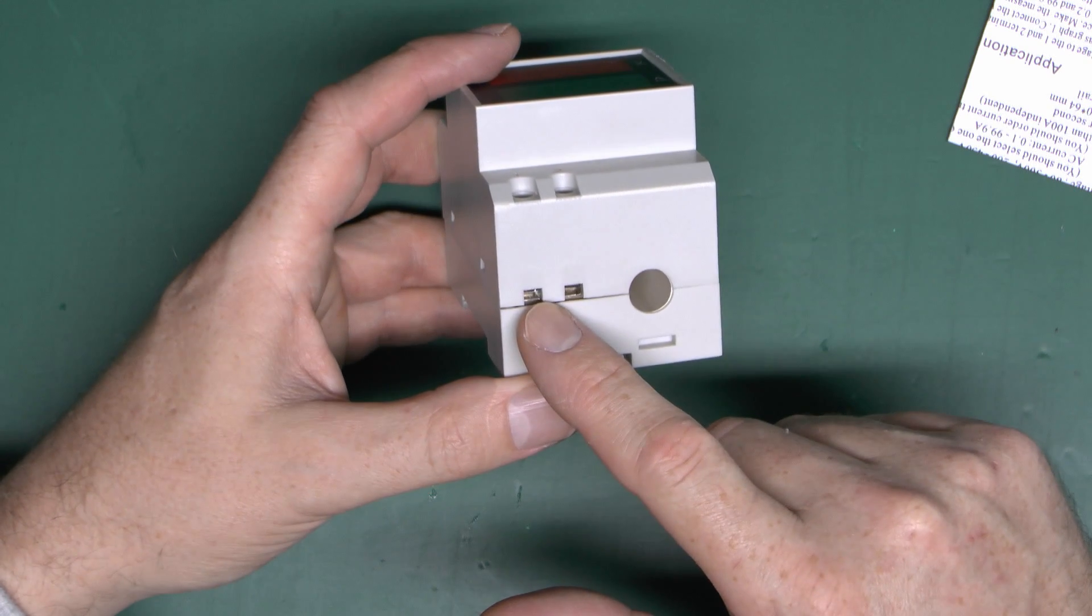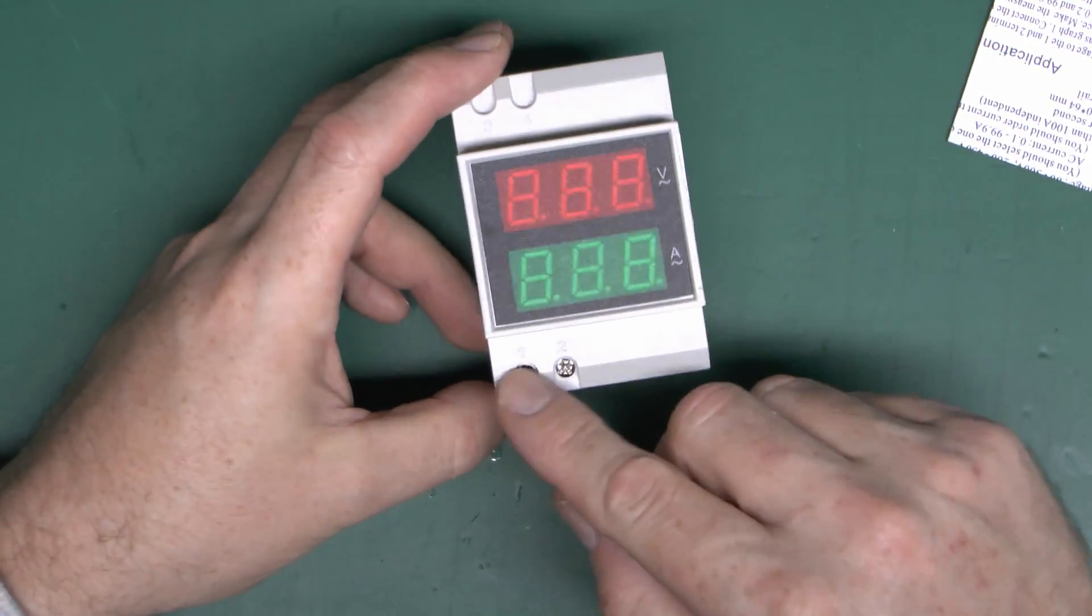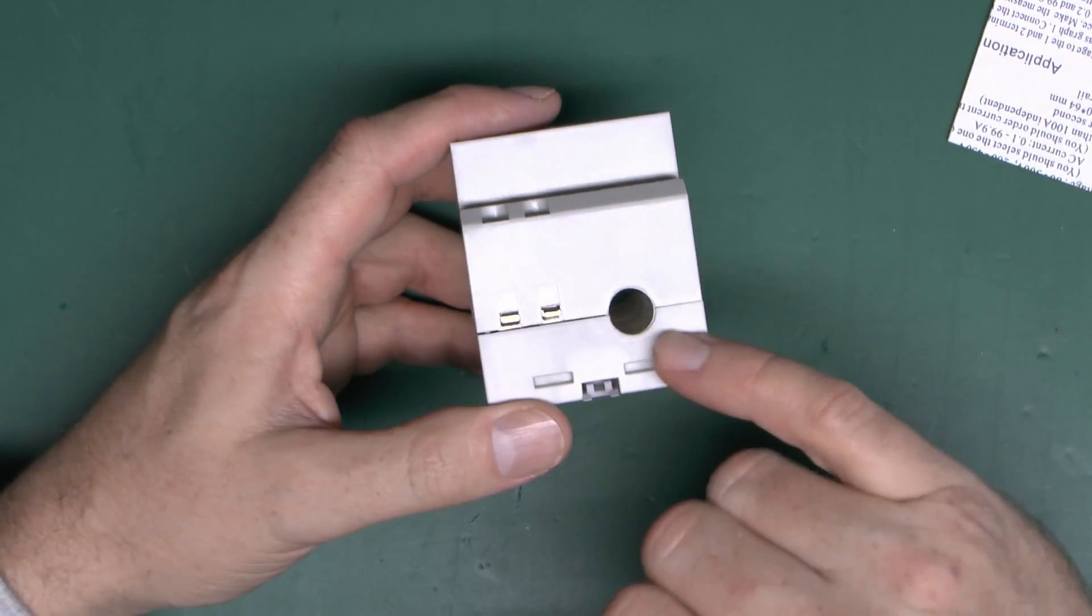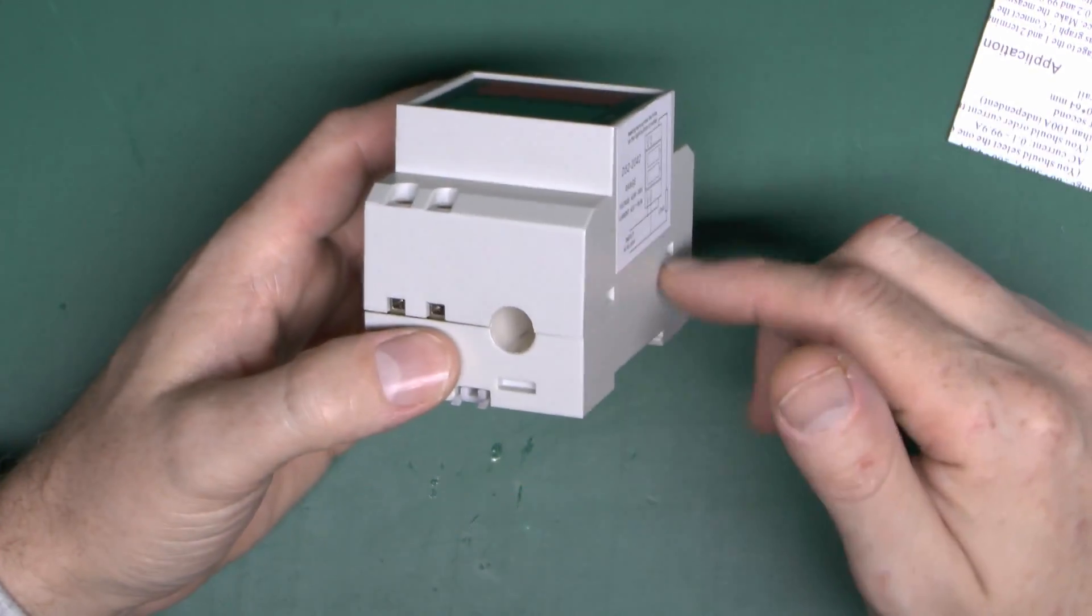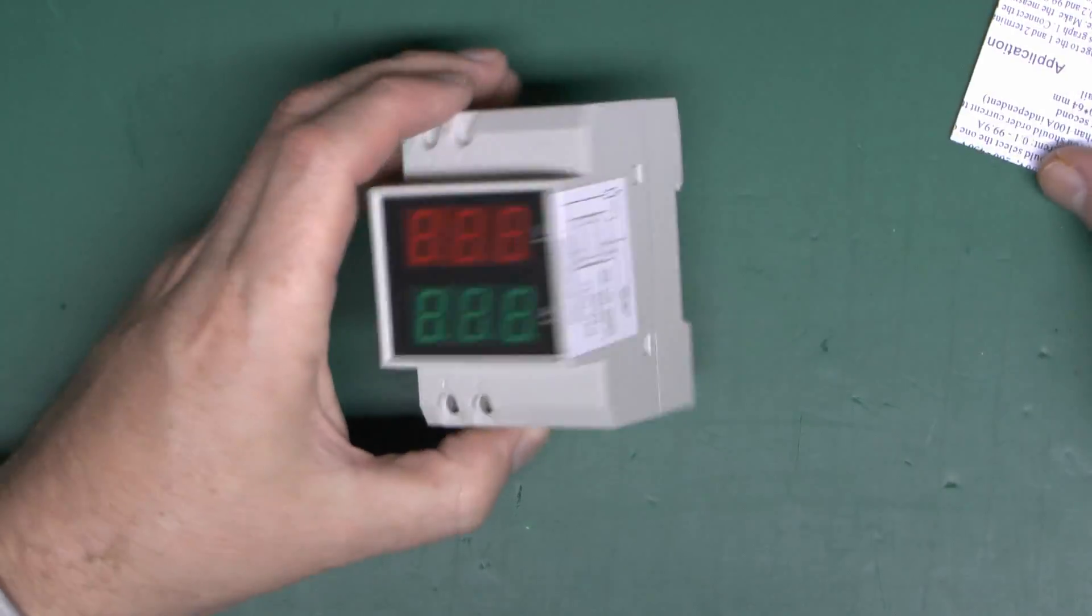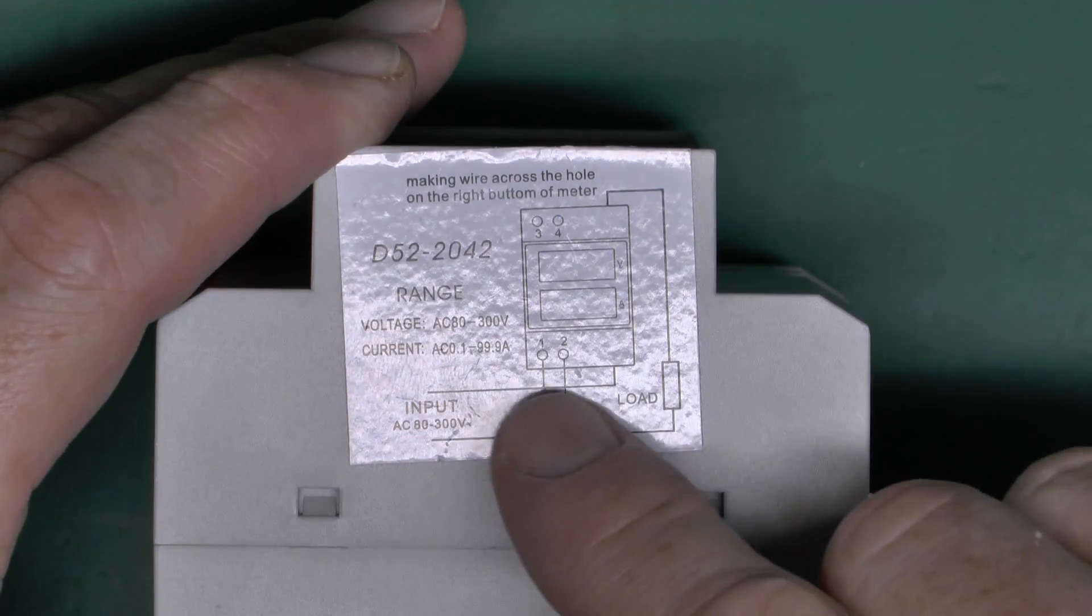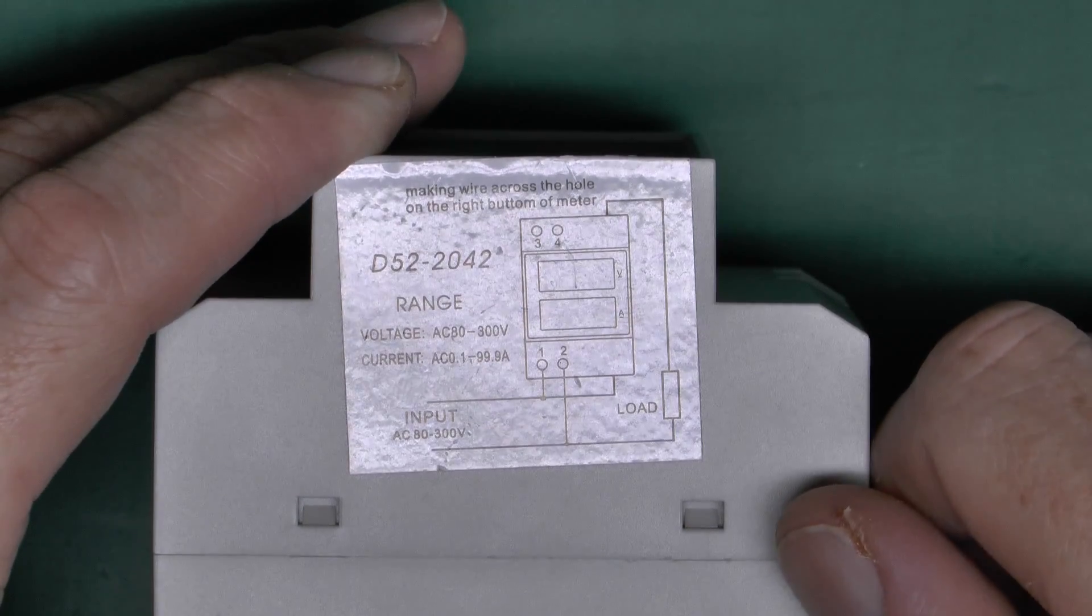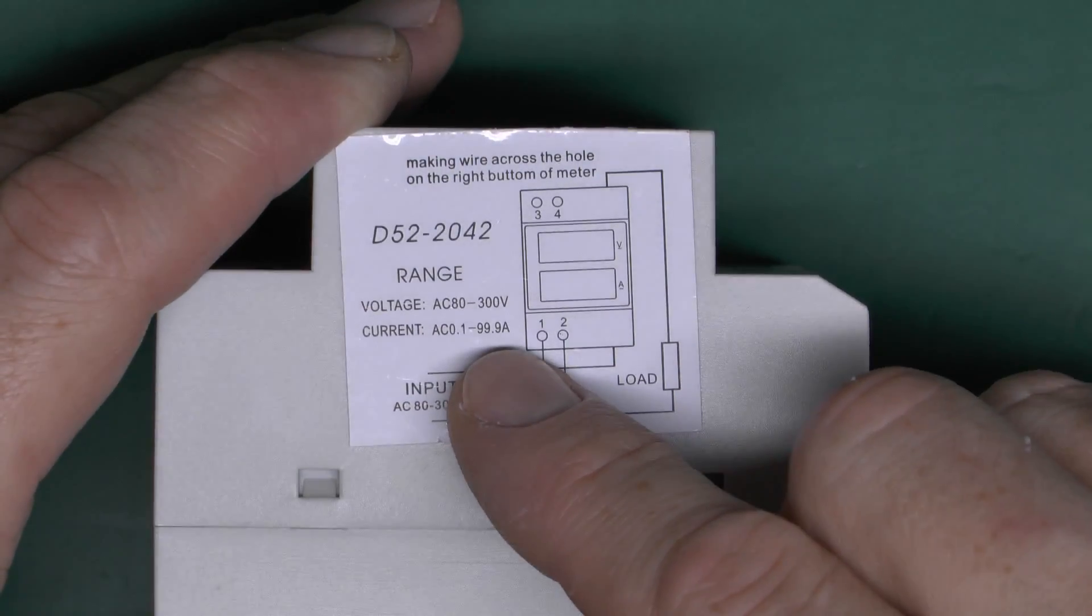The way these things work, they only have two connections. The two wires go in the bottom here, and that's basically your main supply - 240 volts or whatever voltage you're using, just the two terminals. That powers the device and is where it's measuring the voltage from as well. For the current, it's actually done through this hole. You're essentially just passing the wire through the hole there, and there's a current transformer inside which measures the current and displays it on the green display on the front. Voltage on this is 80 to 300, and current is 0.1 to 99.9 amps. Quite a wide range there.